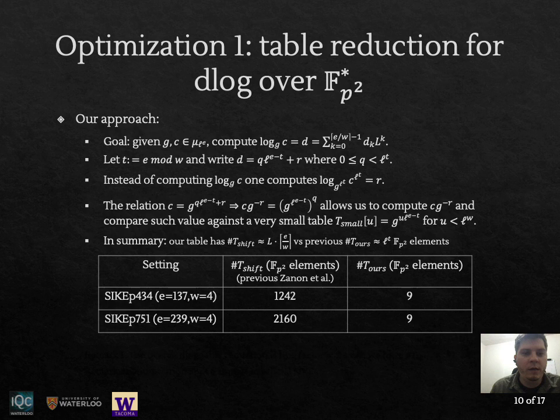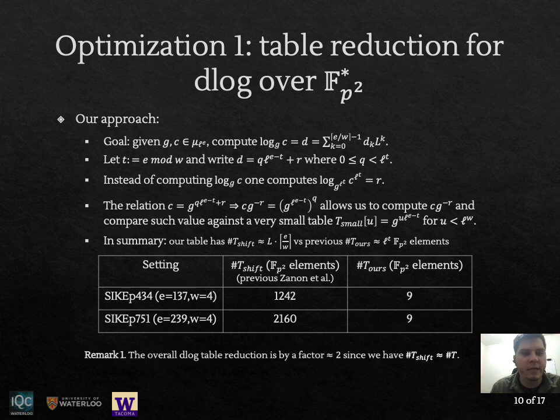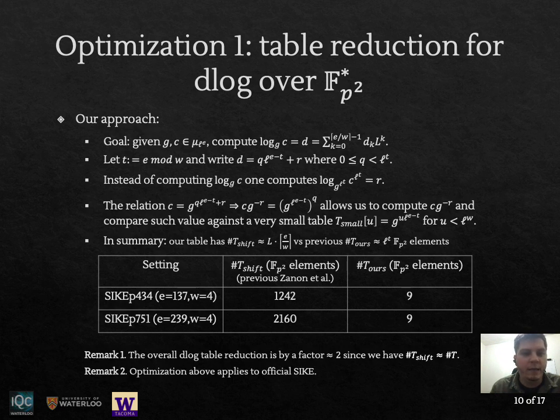And if we compare this new table with the previous T_shift, the table proposed by Zanon et al., we can see that we can basically reduce the entire table. We can consume less than 1% of the size of the previous table. So one of the remarks is that because we had even the original table T in addition to T_shift, the overall reduction here is going to be a factor 2 when you compare with both tables T_shift and T. And this optimization applies to discrete logs over finite fields, so it applies to official SIKE and will also be used when solving discrete logs over elliptic curves.